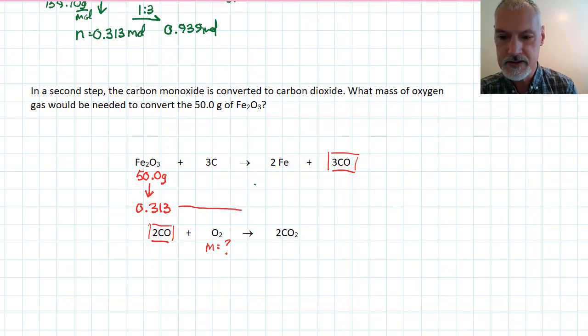So, here's the first step. I take this. The ratio that exists between these is 1 to 3. So, I'm going to produce 0.939 moles of carbon monoxide.